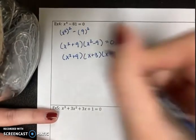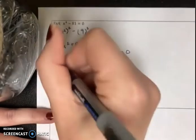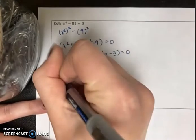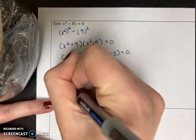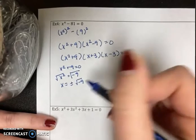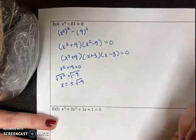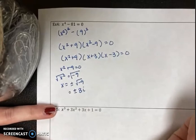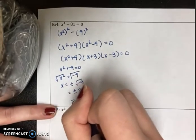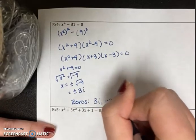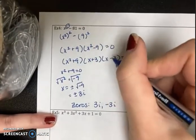Now that we've factored as far as possible, set each factor equal to zero. x²+9=0 gives x²=−9. Taking the square root with plus or minus: √(−9)=√9·√(−1)=3i, so x=±3i. Setting x+3=0 gives x=−3, and x−3=0 gives x=3. Since it's degree four, we have four zeros: ±3i, +3, and −3.